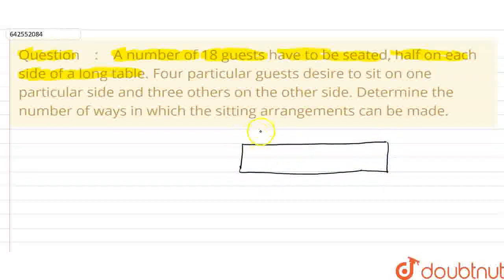we have 18 guests and half will sit on one side, that is 9 will sit on this side and 9 guests will sit on this side. Let this side be named as A and this side be B.